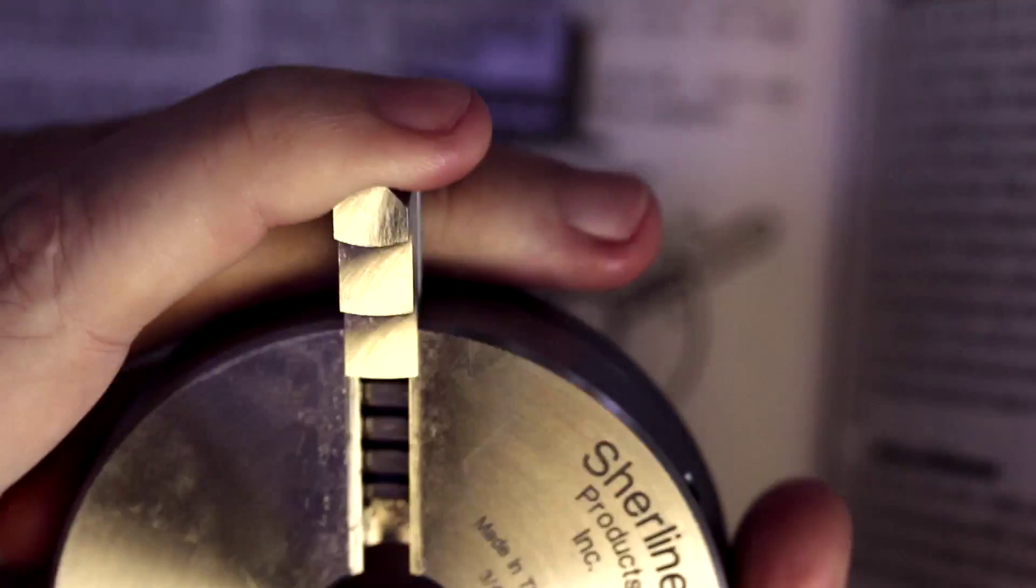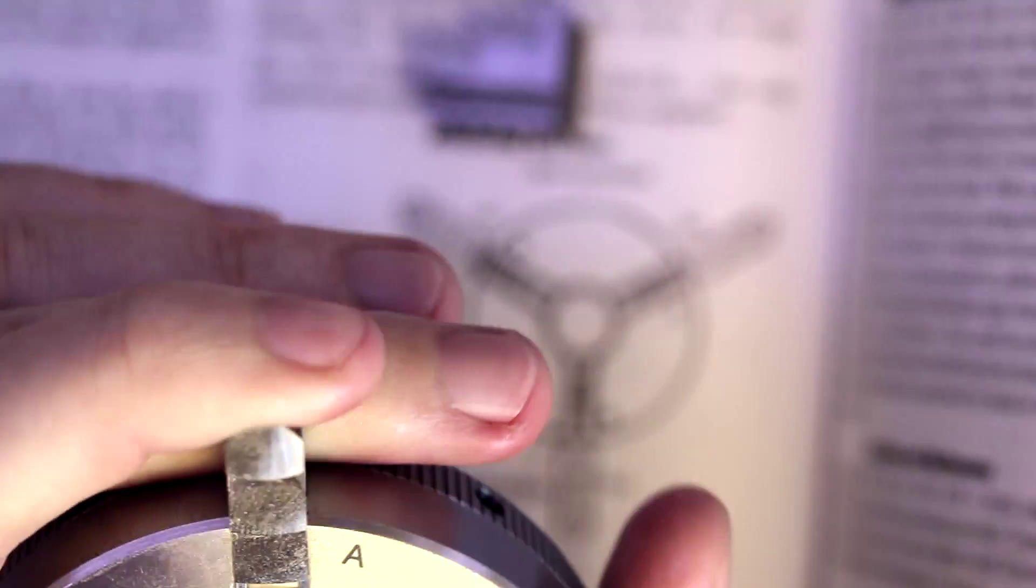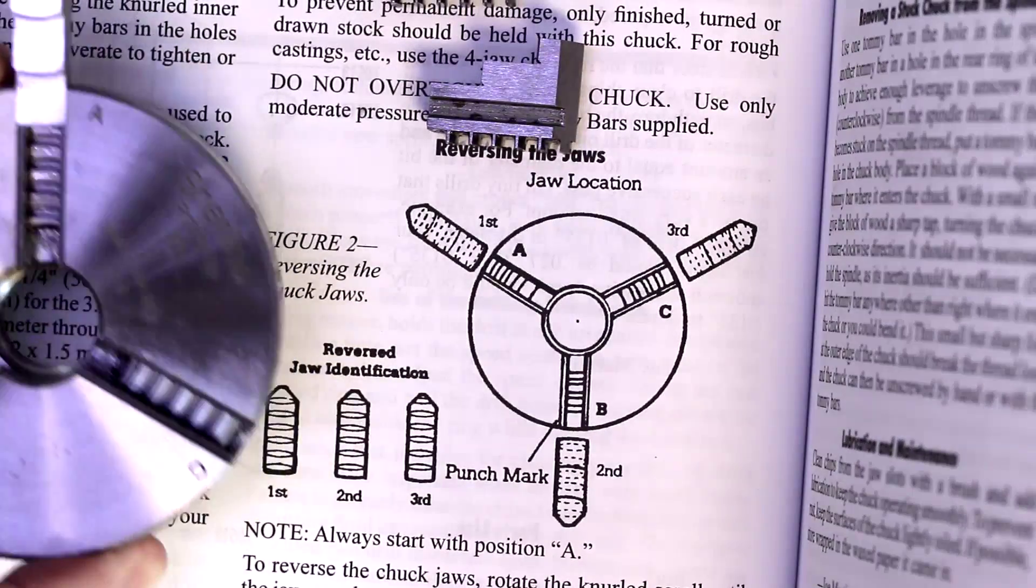So we're going to adjust our scroll to where that first thread is going to be near the A jaw. We're going to move it out of the way, slide our jaw on—which this A jaw is a little bit tight—and then while putting some downward force on it so that we make sure and engage it, we're going to turn that scroll. And our first jaw is engaged.